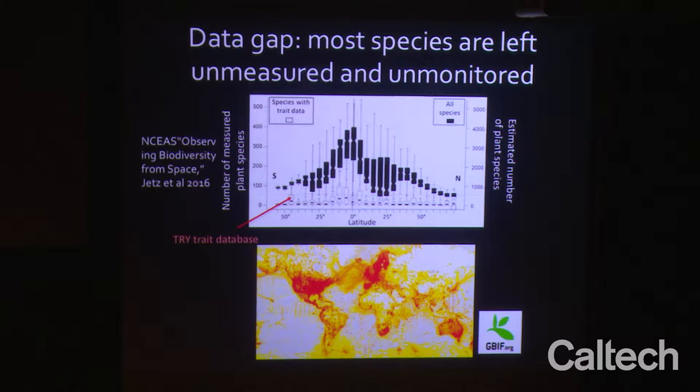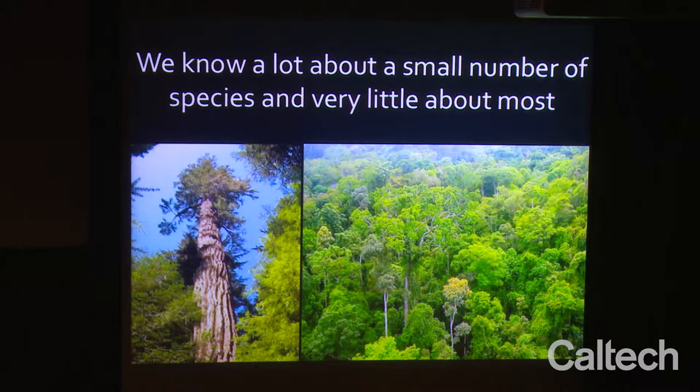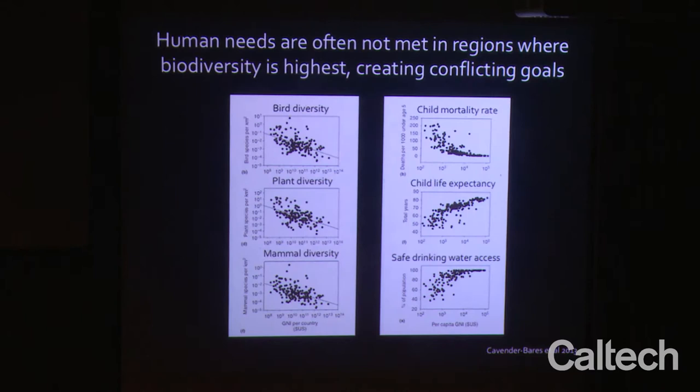I've been part of the Intergovernmental Platform on Biodiversity and Ecosystem Services for the last three years. This is the America's Regional Assessment. Despite those threats I just explained, the number one driver of biodiversity loss is land use change due to agriculture and forestry. Going forward, you see the importance of climate change, fragmentation, and encroachment. There's a big data gap between the data being monitored and the species estimated to actually be on planet Earth. We know a lot about a small number of species and very little about most of them.